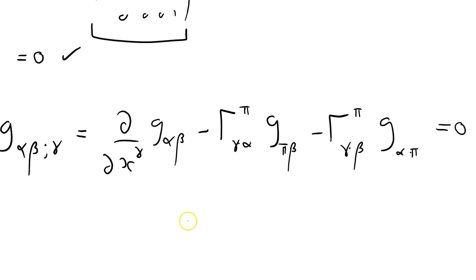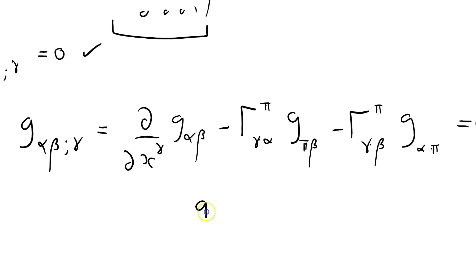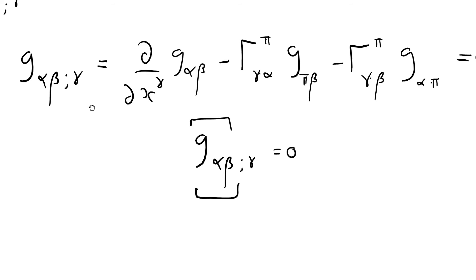So if I want to work. Look at that. Look at that. G alpha beta semicolon gamma equals zero. The covariant derivative of the fundamental tensor, the metric tensor G, is zero. What? Isn't that amazing? Isn't that the most amazing thing you've ever seen?